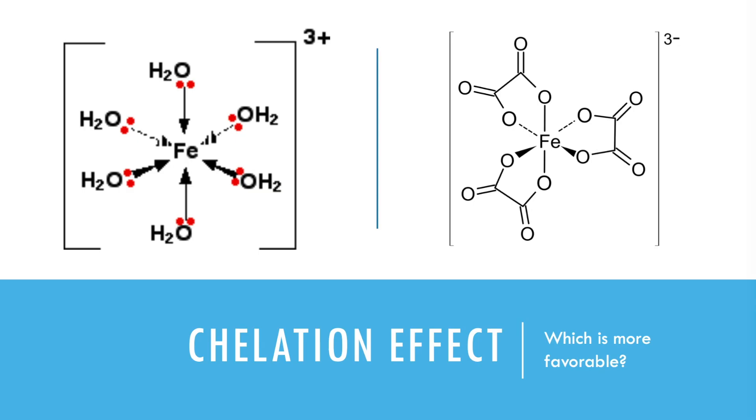Okay, now we're going to talk about the chelation effect. So this is something that you probably heard about in Chem 106. So we have two examples here where we have an iron ion. And in the example on the left, six water molecules are binding, they're all binding by an oxygen. On the right, we have three oxalate ions, C2O4 two minus ions, and notice that each one binds in two different places. Now, the question is, which of these is more favorable and why?